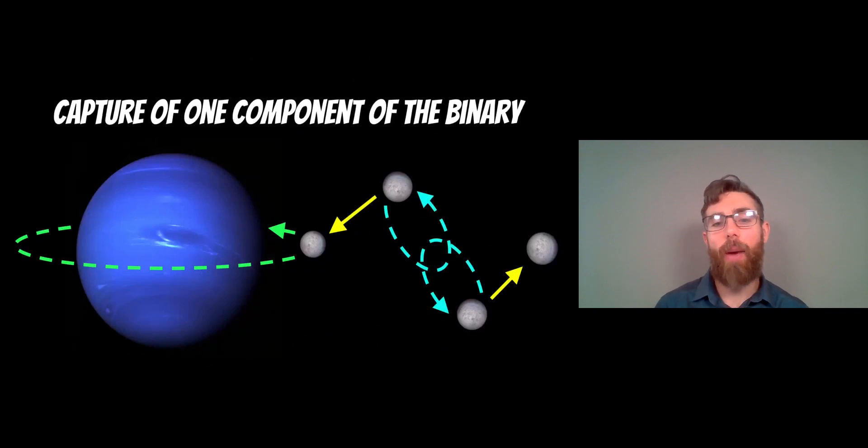So the capture process of Triton is thought to possibly be from a binary system that got too close. So you had a double dwarf planet. They were orbiting a common centre of mass. They could have been fairly similar in size, like the Pluto system and its moon. And if it got too close to Neptune, one of those components would have been captured, and then the other one would have been thrown back out and ejected. So the one that was captured, it's essentially replaced its dwarf planet component with a larger planet component. So it's almost like a gentle swap.